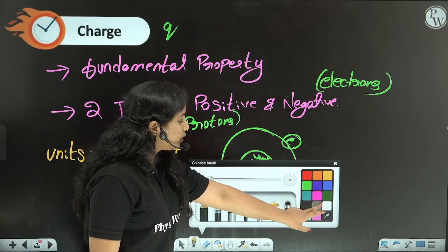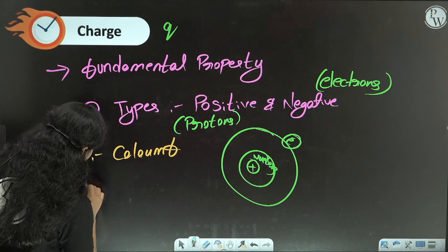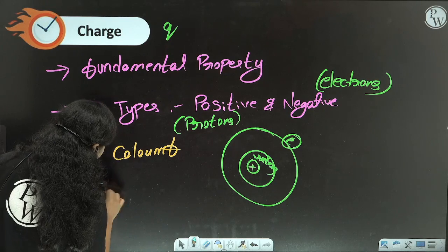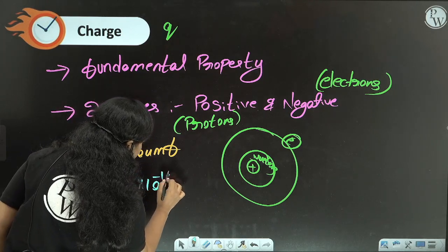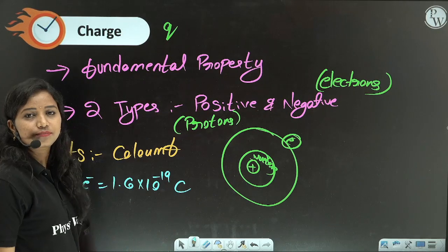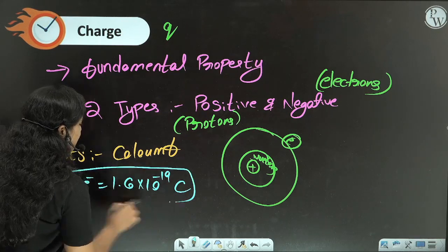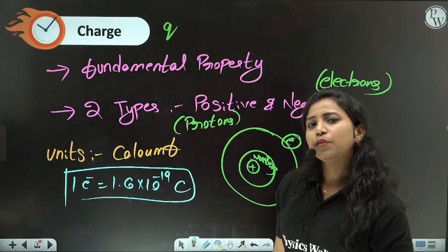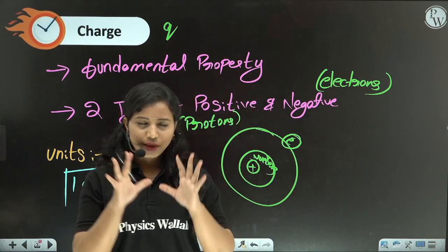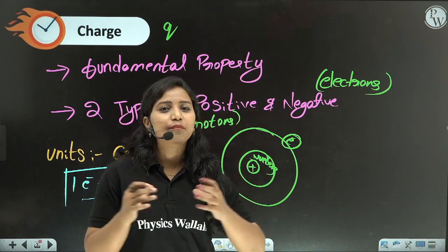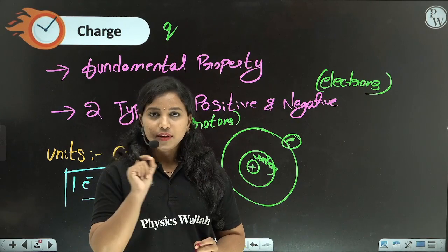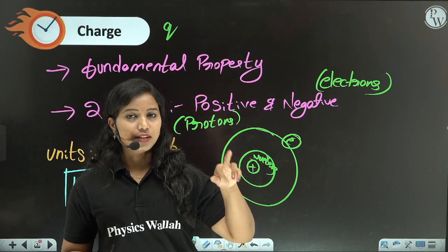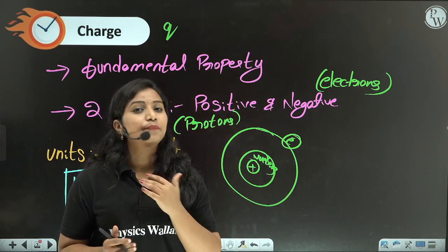For one electron, the charge is 1.6 × 10⁻¹⁹ Coulombs. This charge is negative for electrons and positive for protons — the magnitude does not change. So charge is a basic fundamental property: whatever atom or material is formed, it is formed with these charges — electrons carry negative charge, protons carry positive charge.